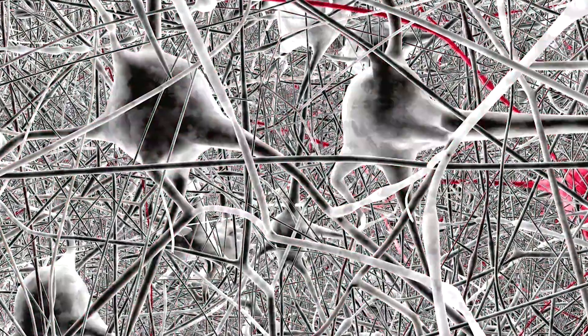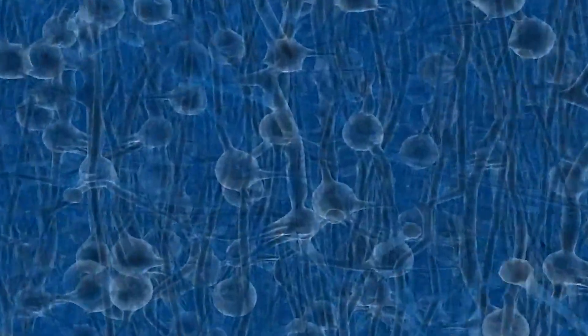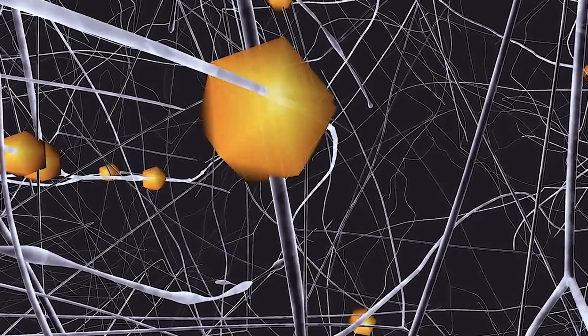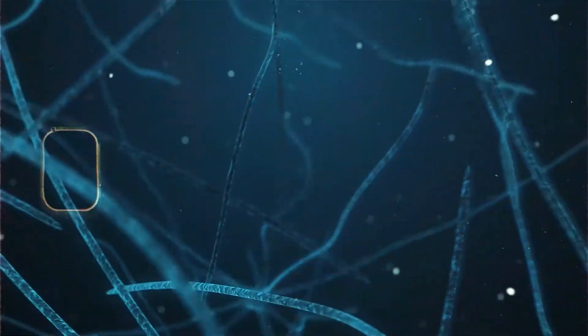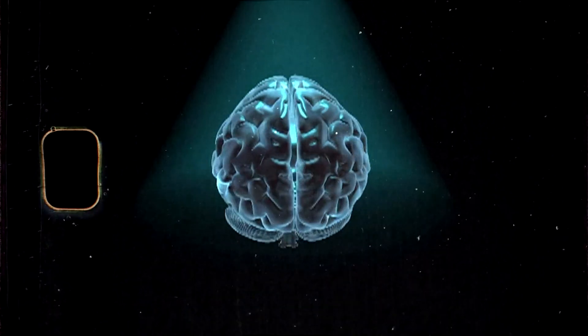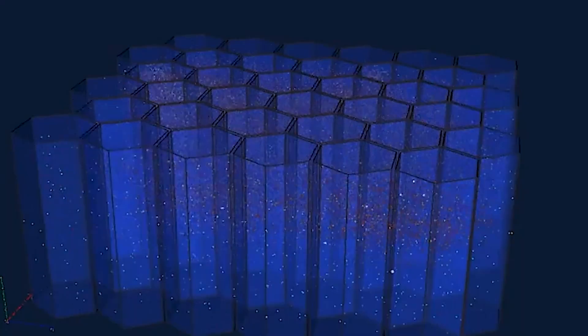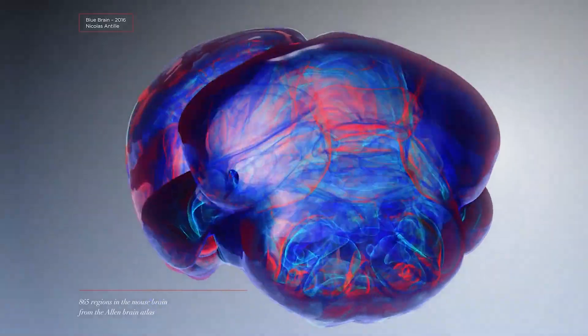The choice to simulate a rat's neocortical column wasn't arbitrary. Composed of about 31,000 neurons, this minute section of the rat brain is considered a fundamental building block. And while this might seem minuscule compared to the estimated 86 billion neurons in a human brain, successfully simulating this column would mark a significant milestone in neuroscience.